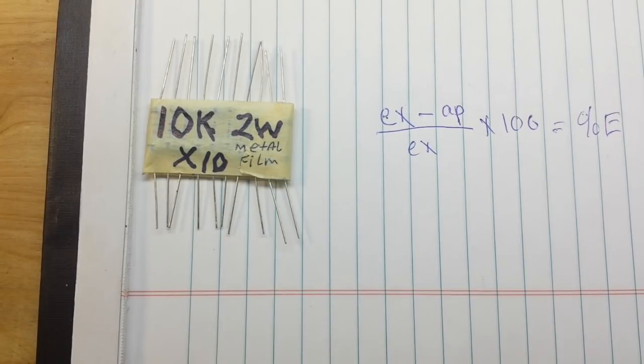We're going to use the Fluke 8840A multimeter to do a four-wire measurement for that, a Kelvin measurement. That's going to give us our most accurate measurement, and we're also going to back up our readings by checking them against some other multimeters. So let's get started doing that.